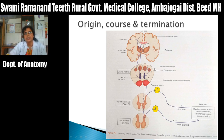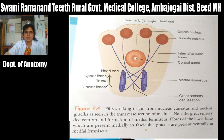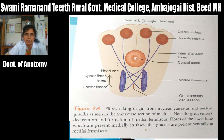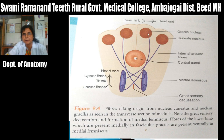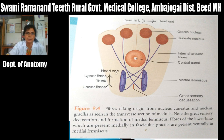This is the origin, course, and termination of fasciculus gracilis and fasciculus cuneatus. In a transverse section at the lower part of the medulla, you can see nucleus gracilis, nucleus cuneatus, and the internal arcuate fibers arising from them. These decussate with similar fibers from the opposite side — the great sensory decussation — and continue as the medial lemniscus. Lower limb fibers in nucleus gracilis are present medially and anteriorly in the medial lemniscus; upper limb fibers in nucleus cuneatus are present posteriorly.